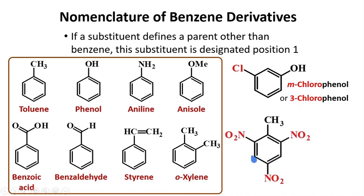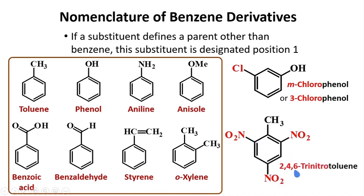This compound has a methyl group, so the parent compound is toluene. There are three nitro groups. If we consider the methyl carbon as C1, the nitro groups are at C2, C4, and C6. The proper name for this compound is 2,4,6-trinitrotoluene — the explosive compound commonly known as TNT.